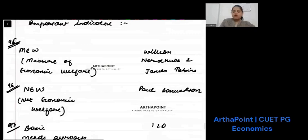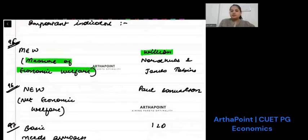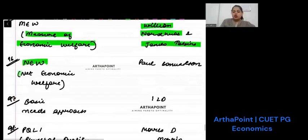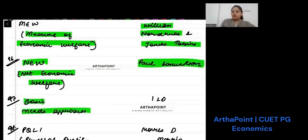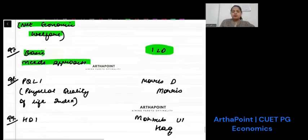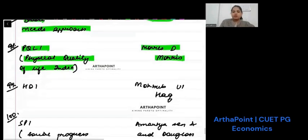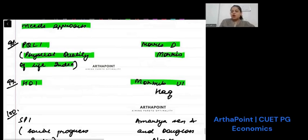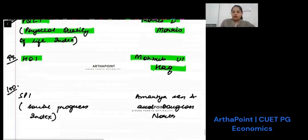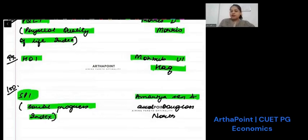Let's look at some of the important indicators. Measure of economic welfare is given by Nordhaus and James Tobin. Net economic welfare is given by Paul Samuelson. Basic needs approach is given by ILO. PQLI, physical quality of life index, is given by—this is important—Morris D. Morris. HDI is given by Mahbub ul Haq. And finally, social progress index, which is SPI, is given by Amartya Sen and Douglas North. So this is the complete 100 economists series. Thank you.